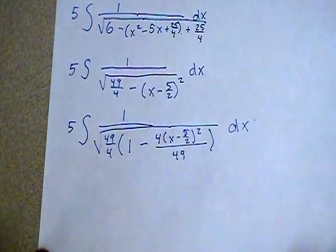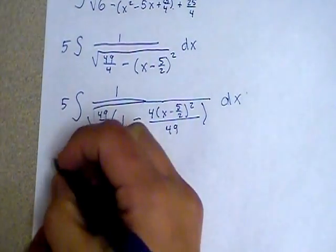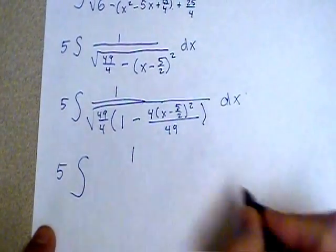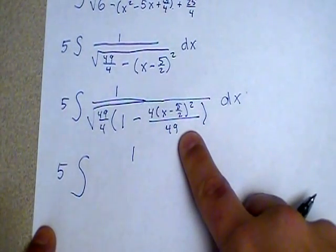So what we need to do before we can do the u substitution to complete this integral is we're going to need to manipulate the last little piece in this denominator.